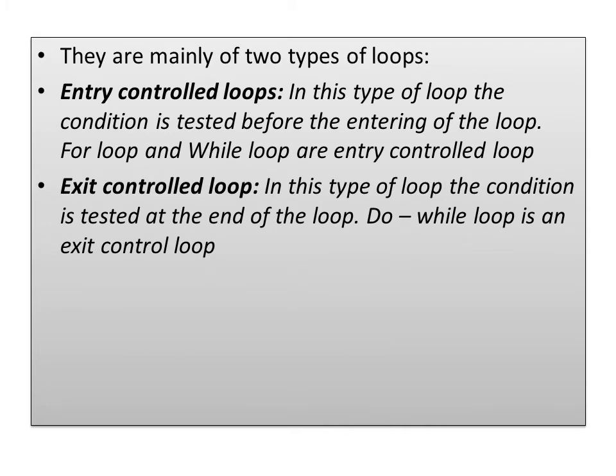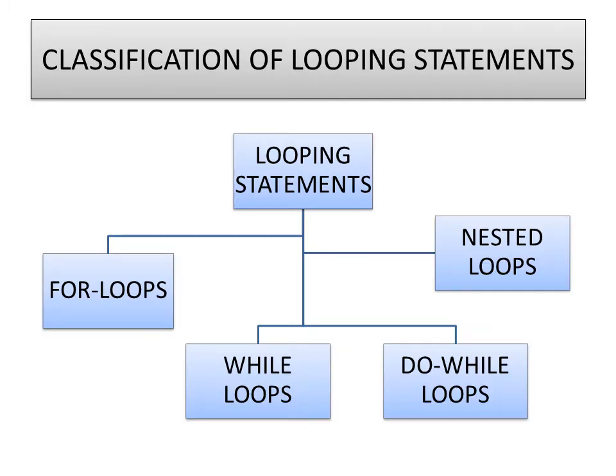Now there are two types of loops: entry control loops and exit control loops. The name itself indicates — in an entry control loop, you have to check the condition first before entering the loop. There are two types of entry control loops: the for loop and the while loop. Exit control loop is the exact opposite — the condition will be checked at the last. The loop here is the do-while loop in exit control loops. So the loops we will be looking into in this module are: for loops, while loops, do-while loops, and nested loops.